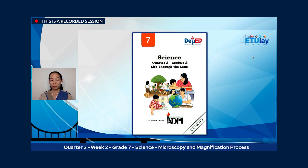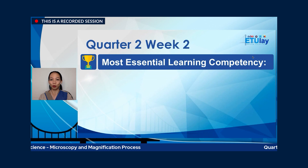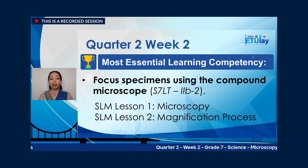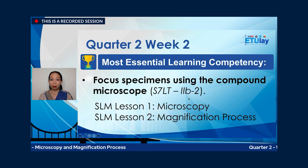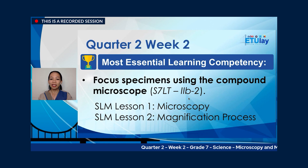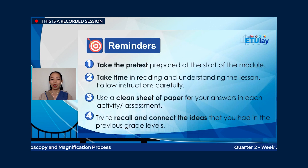This is from DepEd Soxogen Region. Our most essential learning competency for this week is for you learners to focus specimens using the compound microscope, with the code 7S7LT — Living Things in the Environment — for quarter two, week two. The SLM is divided into two lessons: lesson one is on microscopy and lesson two is on magnification process. Today, we will learn both lessons and how you can apply this as you learn science.